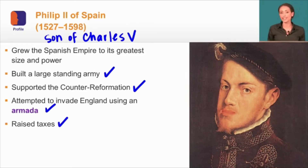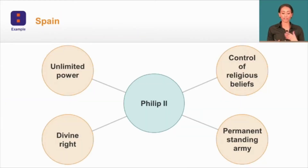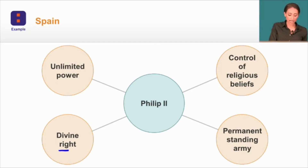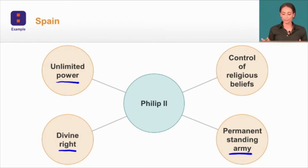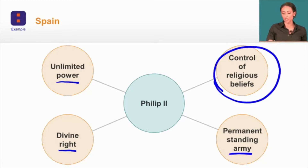Philip II also tried to raise taxes, which was particularly unpopular in the Spanish Netherlands. He believed God had given him the divine right to rule, and used that to justify unlimited power — including building a permanent standing army, continuously taxing the Spanish people and those in Spain's territories. Perhaps most importantly, he tried to control religious beliefs by imposing Catholicism on the Netherlands and England, which eventually led to the Spanish Inquisition.